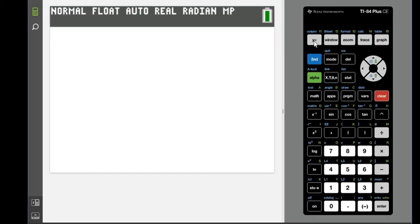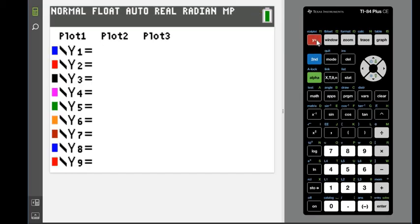To enter your information in, you always hit the y equals. And on your y equals screen, you do want to make sure that you don't have anything in here because if you get a domain error, that means you probably entered something into this menu or into the screen wrong.